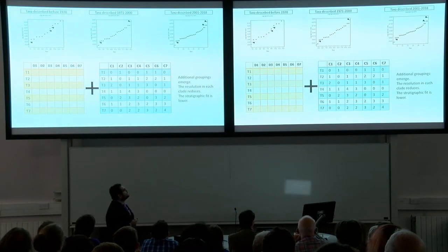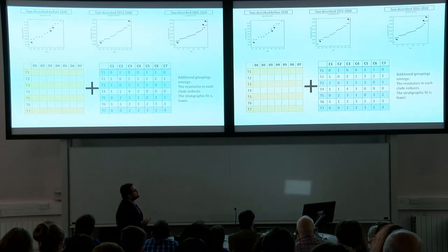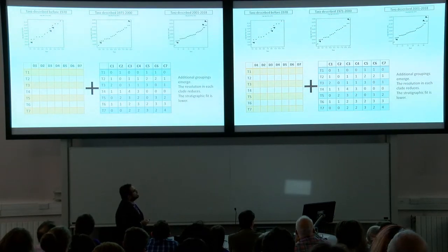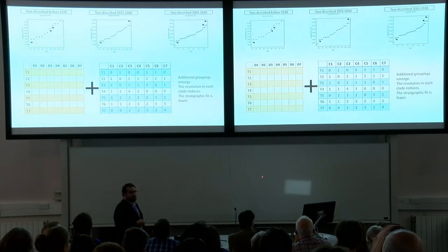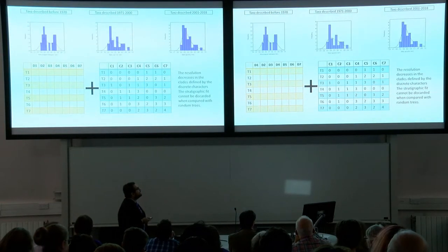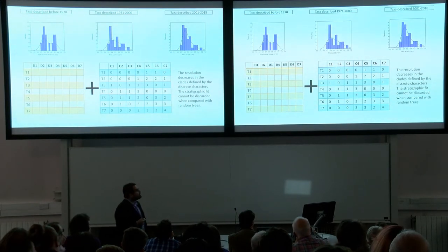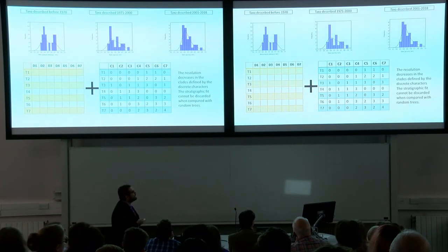I ran analyses having a discrete matrix with a discretized continuous character matrix using gap coding. What I found is that the resolution in every clade I showed before gets reduced, and the stratigraphic fit is lower. Then, using average coding, the stratigraphic fit is even worse, and the resolution decreases in all of the clades.